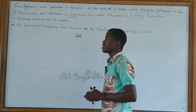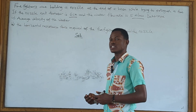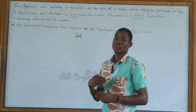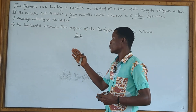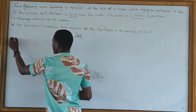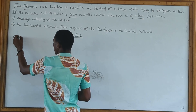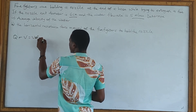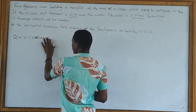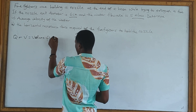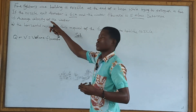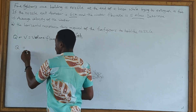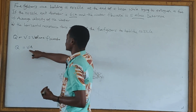We can use conservation of mass to solve this question. For the conservation of mass — a special case for incompressible flow — we use Q, also written as V-dot, which is the volume flow rate. We know that Q is equal to V times A.